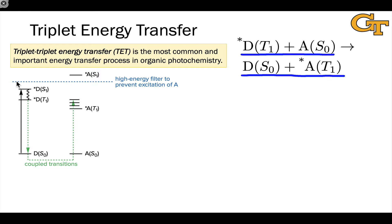And often in practice, we use a high energy filter to prevent the photoexcitation of A. So notice that A star's singlet state, the S1 state of A, is above this dotted line. This indicates that it's impossible to photoexcite A under the conditions where triplet energy transfer is applied because there is no light with enough energy hitting the sample to perform this photoexcitation. So it does not occur.